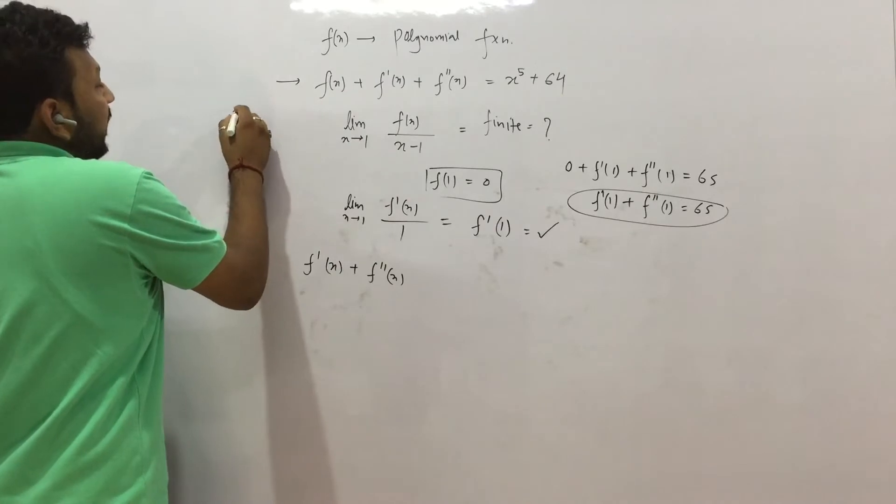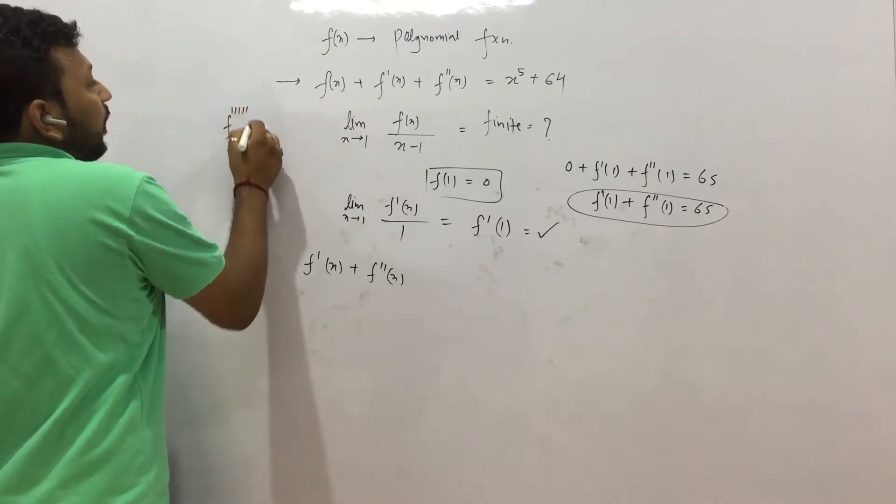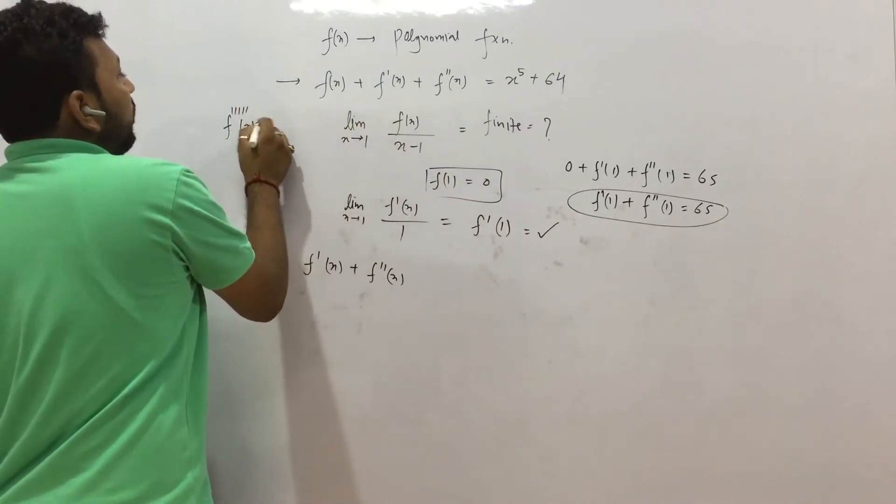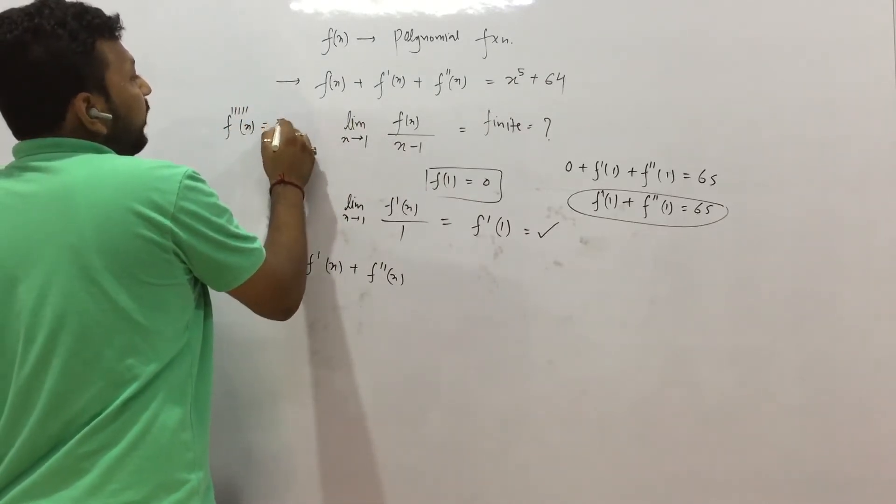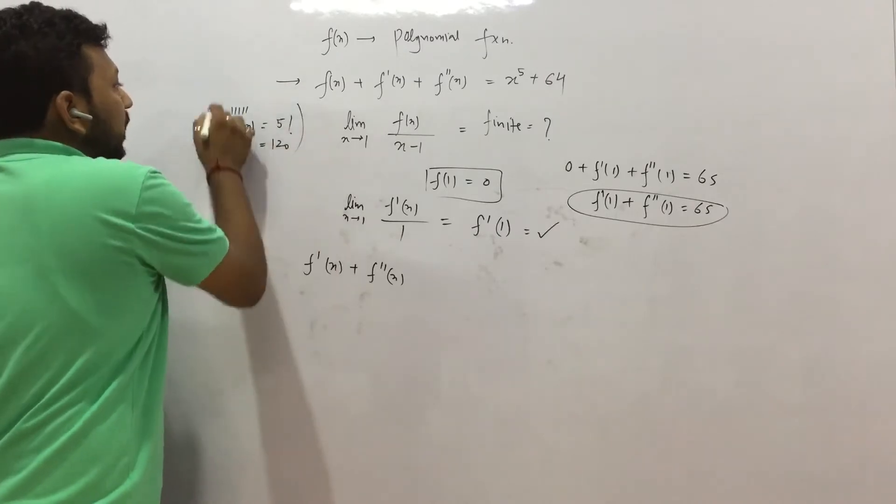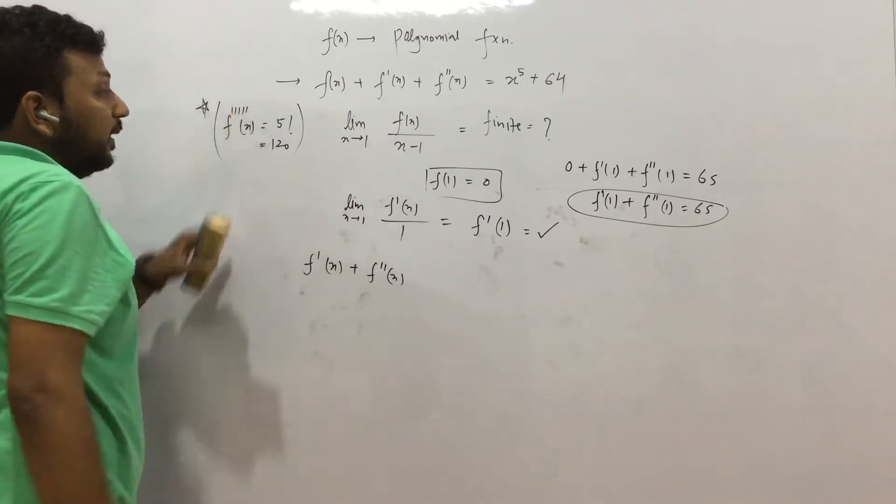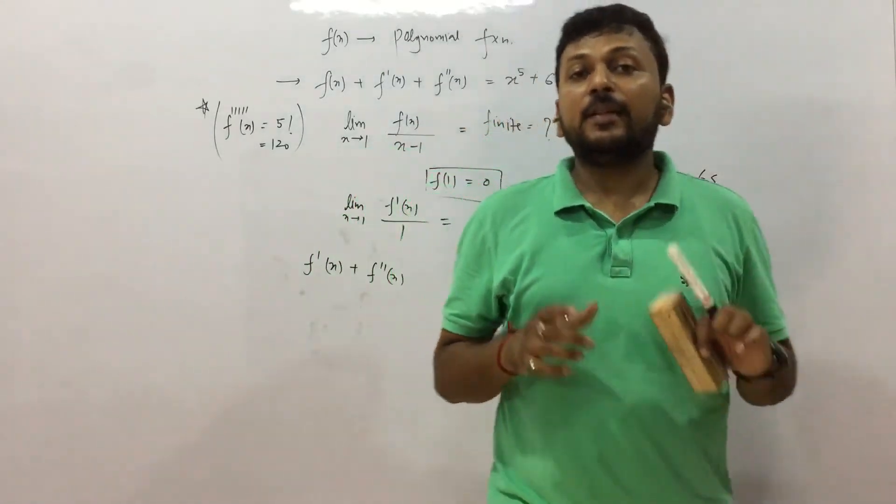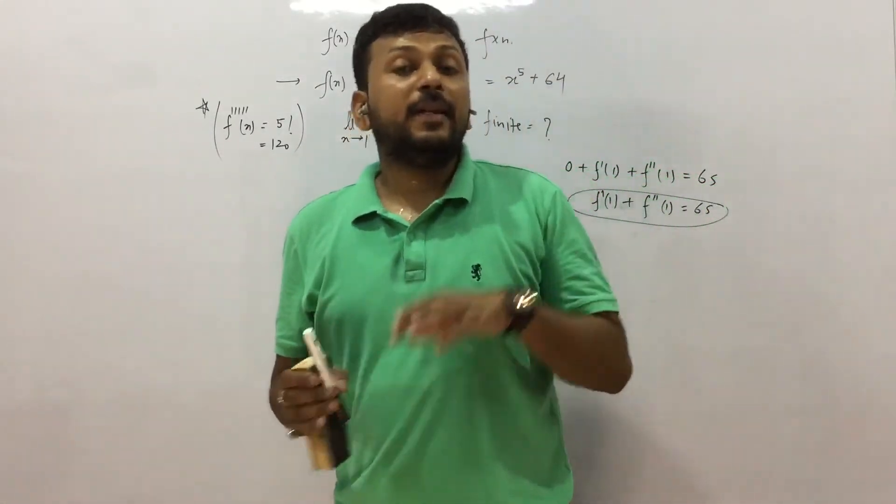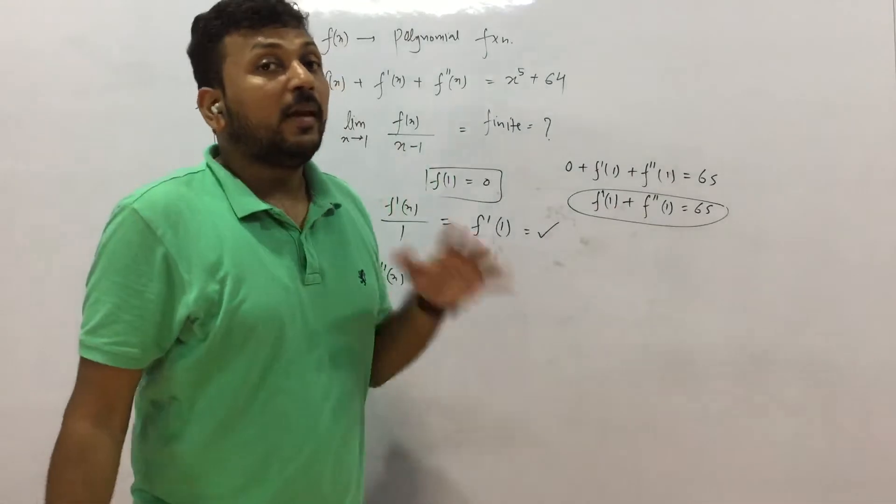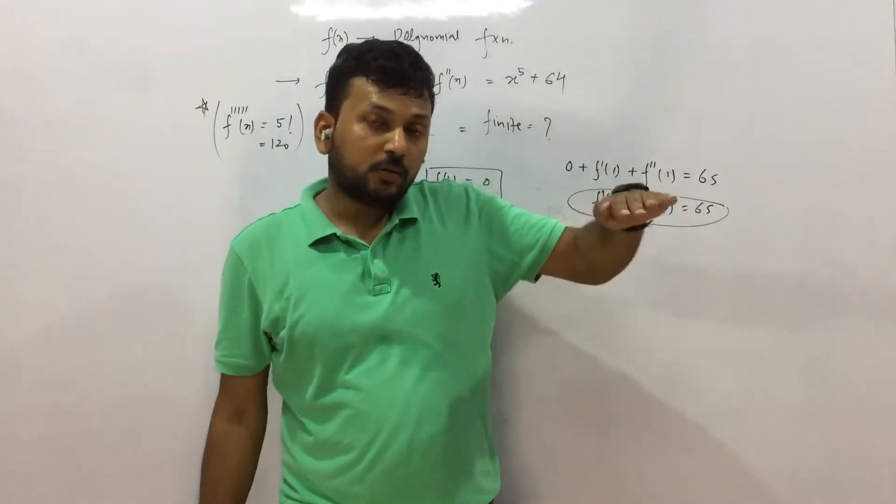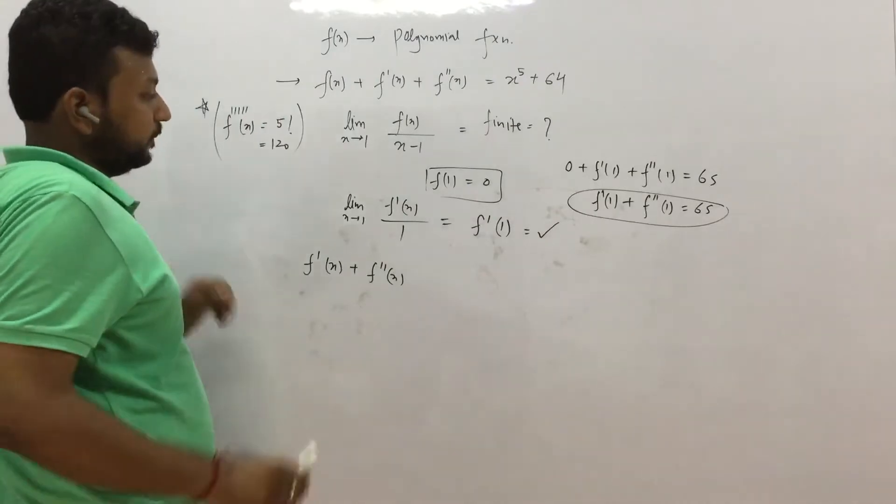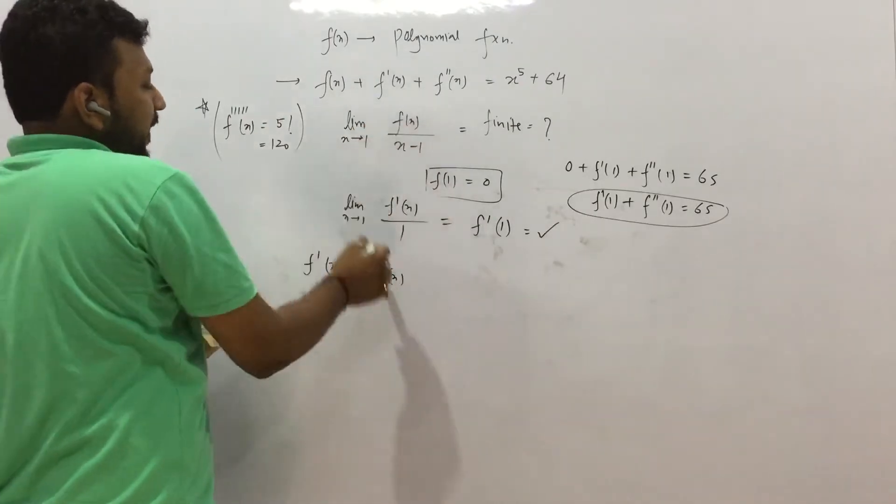So let us do the derivative here. Now we can also see that the maximum power of f(x) is x^5, with no coefficient. Either you can consider f(x) as a polynomial a1 + a2x + a3x² and so on, but that will be a lengthy method. So we will use the trick. We can say that the fifth derivative of x^5 will be 5 factorial, that means 120. This is the trick in this question.